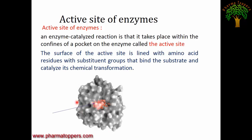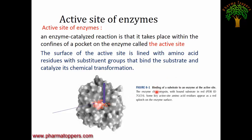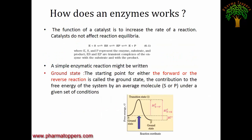The active site of an enzyme: enzyme-catalyzed reactions take place within a specific pocket on the enzyme called the active site. The substrate binds at the active site. Various amino acid side chains at the active site bind to the substrate and help catalyze the reaction. These amino acid residues are useful for catalytic transformation.